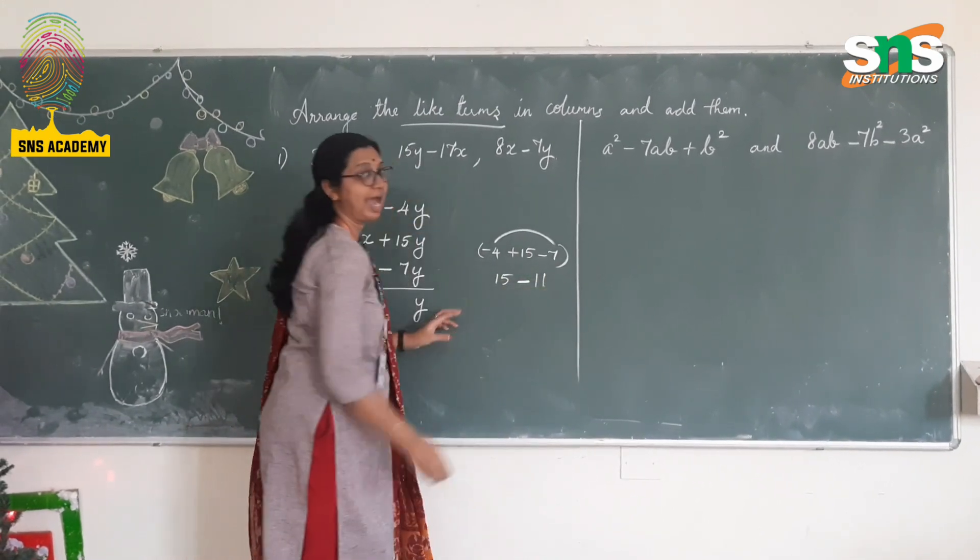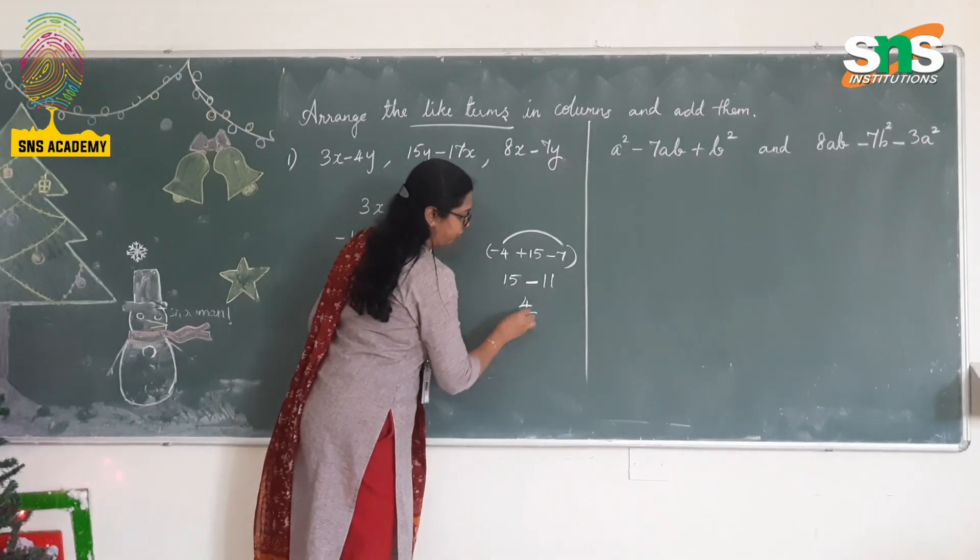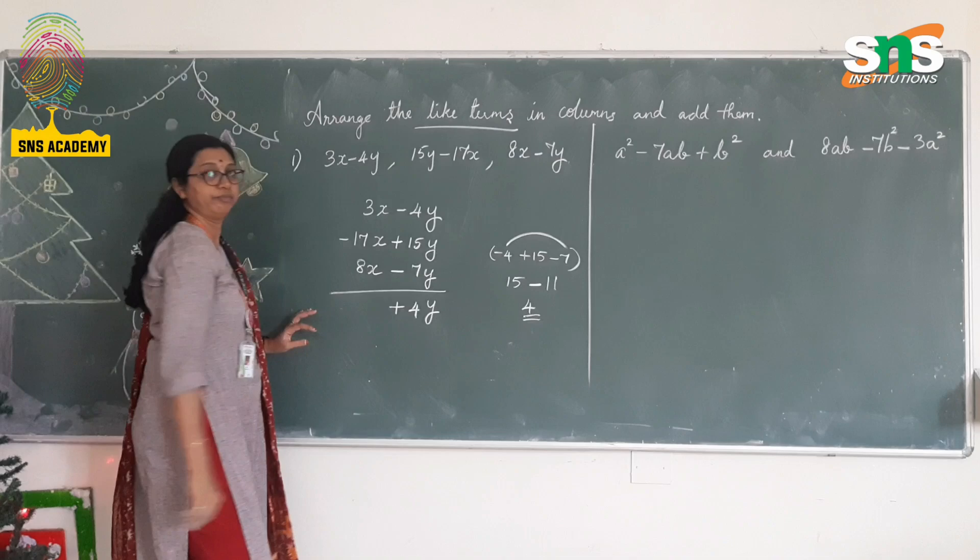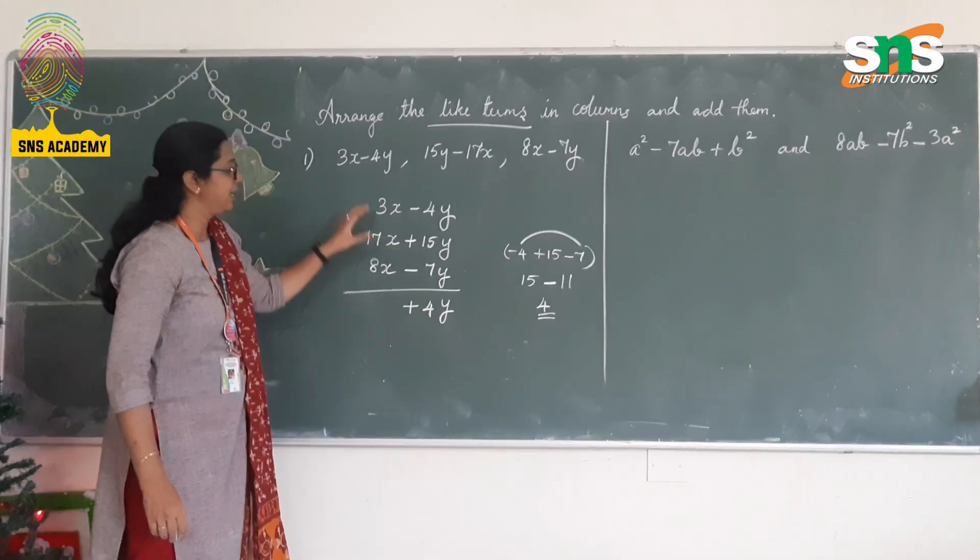So 15 - 11 is nothing but positive 4. Is it clear? So here it is positive 4. So for this term, it is positive 4y. And then, 3x - 17x + 8x.